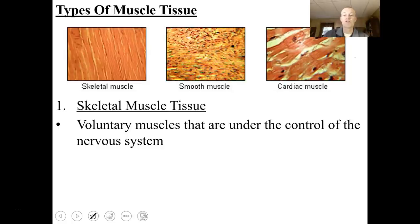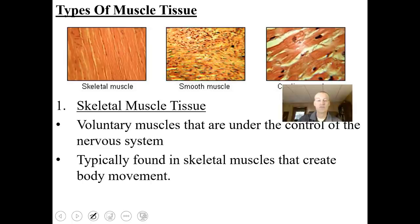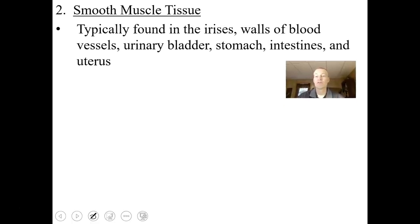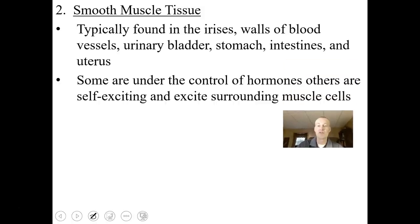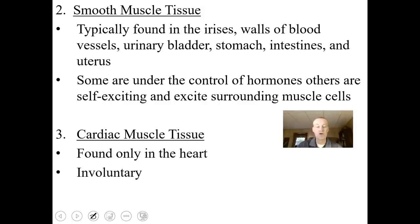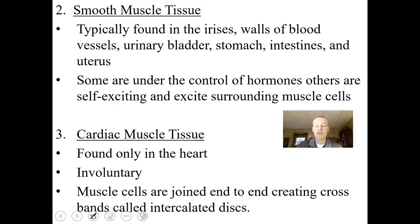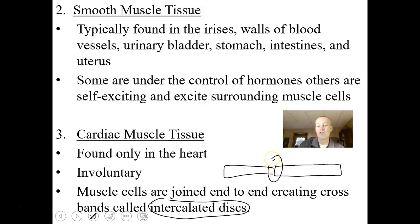Skeletal muscle tissue is voluntary — it's under the control of your nervous system and is typically found in skeletal muscles that create body movement. Smooth muscle tissue is typically found in the irises, the walls of blood vessels, urinary bladder, stomach, intestines, and the uterus. Some are under the control of hormones; others are self-exciting — when they stretch, they contract and excite surrounding muscle cells. Cardiac muscle tissue is only found in the heart. It's involuntary, and muscles are joined end-to-end creating crossbands called intercalated discs with desmosomes and gap junctions that allow exchange of ions.